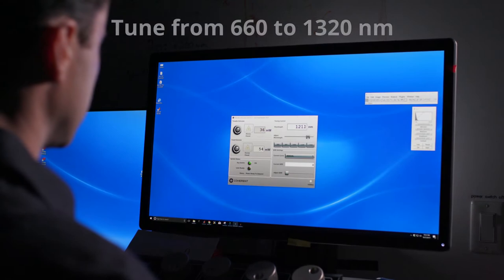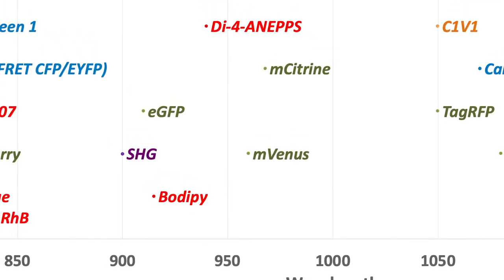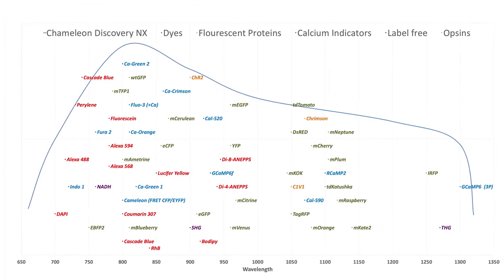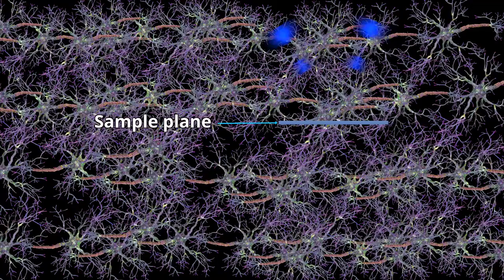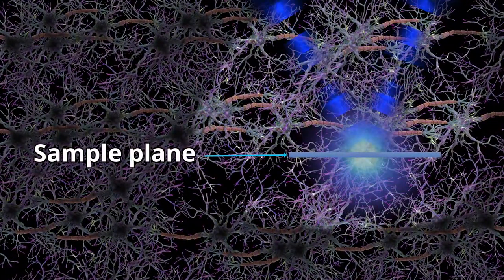Delivering high power across a tuning range of 660 to 1320 nanometers, Discovery excites the widest range of fluorophores and latest generation calcium probes, while short pulses are delivered directly to the sample plane to maximize excitation efficiency.